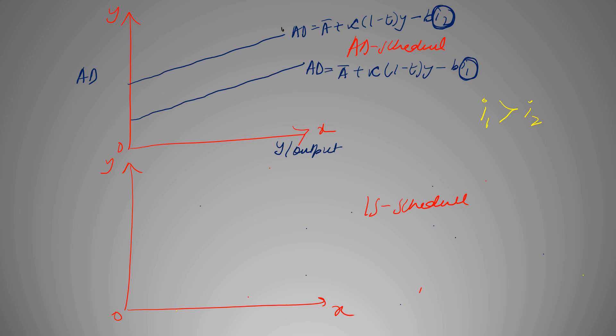We also have our 45 degree line where Y equals AD, so that gives two intersection points. In our goods market, as interest rate decreased - because I2 is lower than I1 - our output increased from Y1 to Y2, and our aggregate demand also increased from A minus BI1 to A minus BI2. We see a positive relation: when interest rate declined, your AD increased and your output increased.